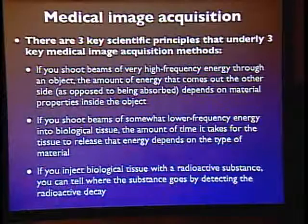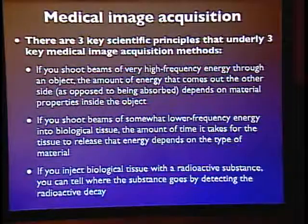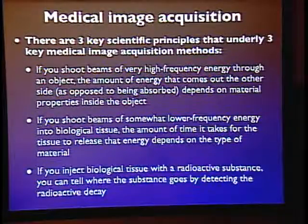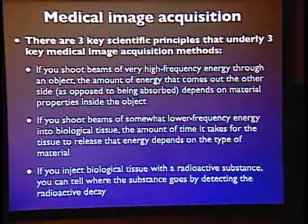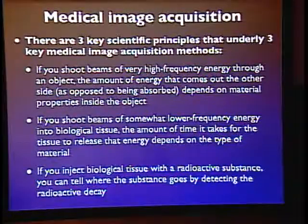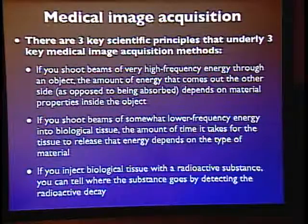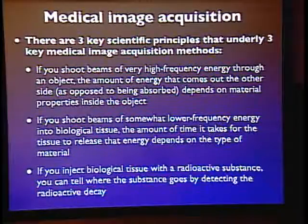The first simple principle: if you shoot beams of very high frequency energy through an object, they tend to go through it, but they are also absorbed by the material inside as they travel. The amount of energy that comes out the other side — as opposed to being absorbed — tells you something about the material properties along the line of travel. You probe one line at a time; if you do that repeatedly from repeated directions, you can back out the material properties at every 3D location.